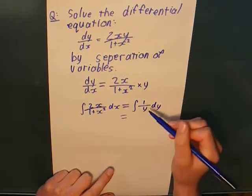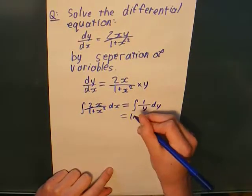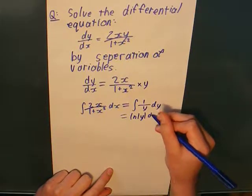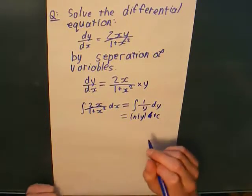Now, we all know that integral one over y, dy, is just ln absolute value y, plus c, where c is a constant, which you only need to include on one side.